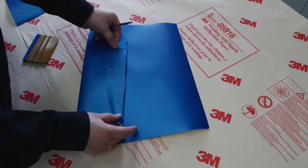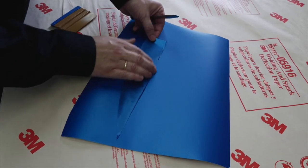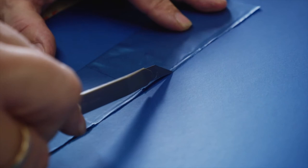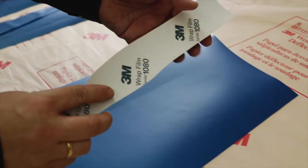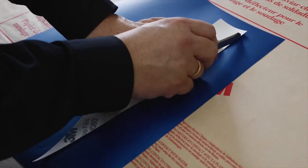Place the stencil on top of your chosen wrap film and cut to size. You can create the mirror image of the shape for the other side of the recess by flipping over the stencil and cutting to shape.